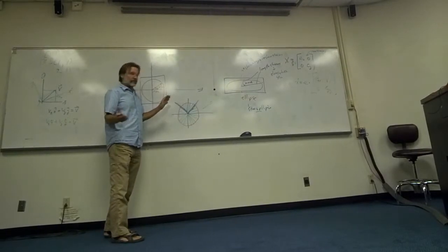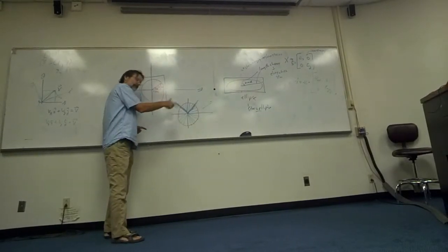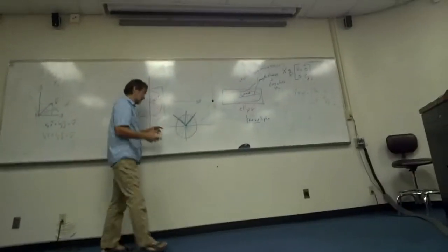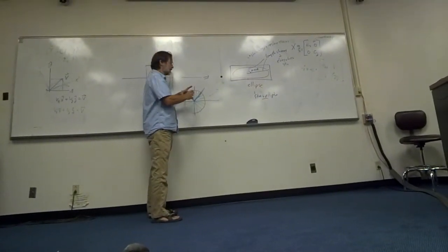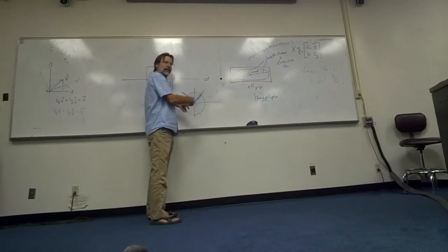Okay? That make sense? So strain is variable with orientation, just like anything else. But that's what makes this quantity a so-called second order tensor, is it obeys that rule, that systematic variation.